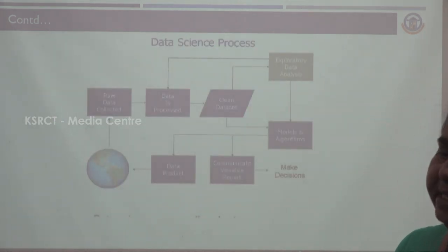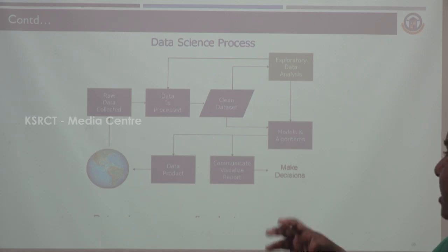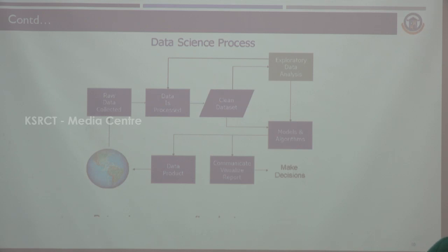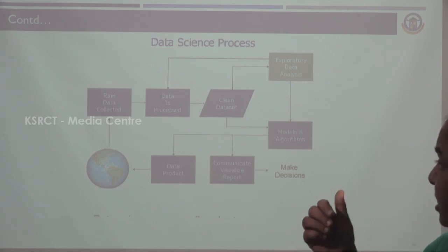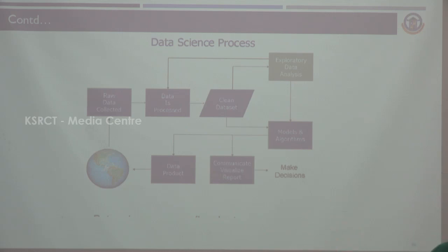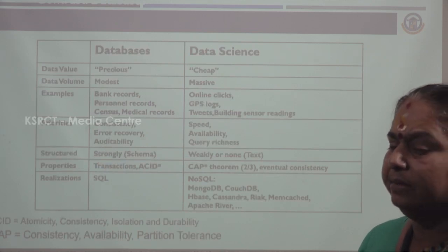The data science process: first, raw data are collected. Next, data is processed. Then clean the dataset. From the clean datasets, exploratory data analysis takes place. Then, using models and algorithms, data are visualized. Then a data product is also made available to the world. This is the data science process.